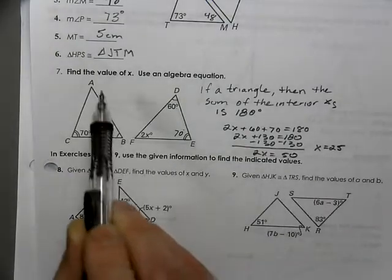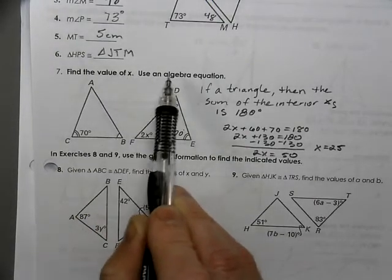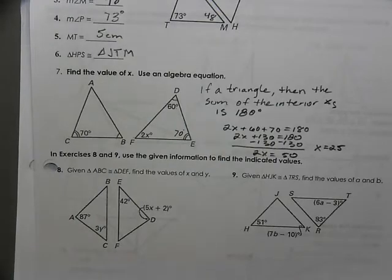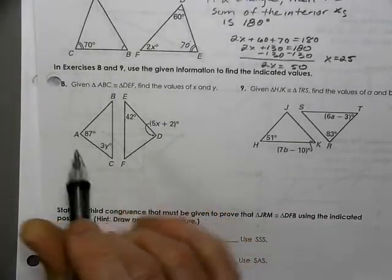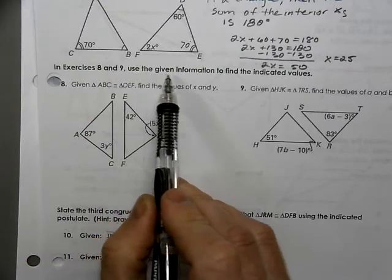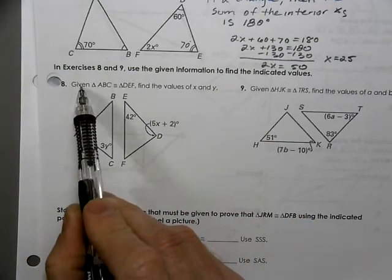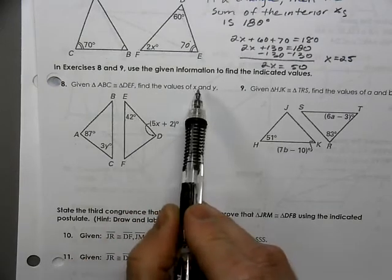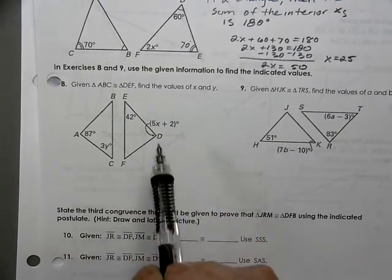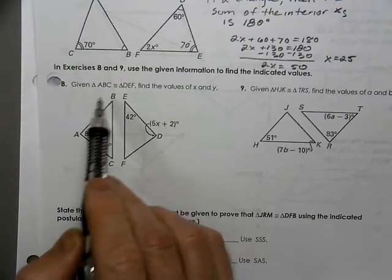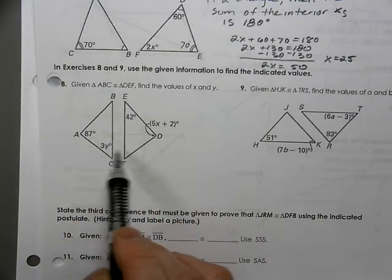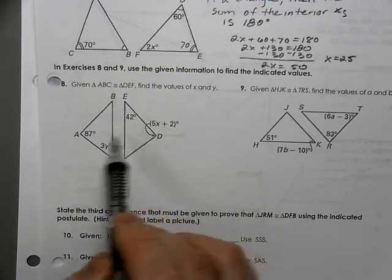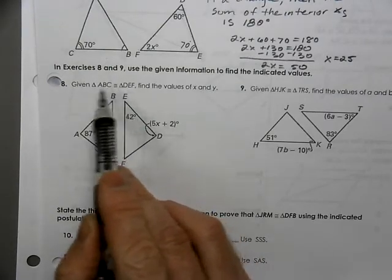Be sure you answer the question — find the value of X. We used an algebraic equation. Now we're going to use the given information to find the indicated values. We know that triangle ABC is congruent to triangle DEF, and we're supposed to find the values of X and Y. C and F are congruent, and A and D are congruent.